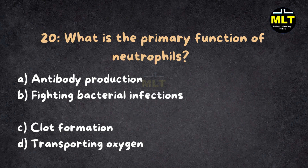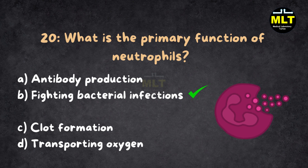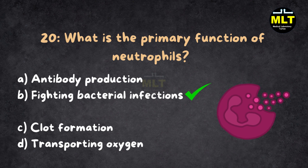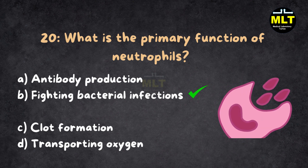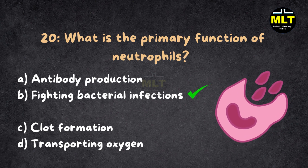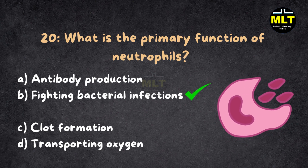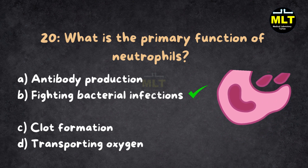Correct answer: B. Fighting bacterial infections. Explanation: Neutrophils are the first line of defense against bacteria, using phagocytosis and enzymes to destroy pathogens.